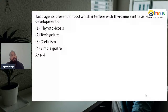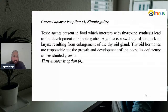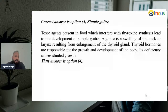Next question: toxic agents present in foods which interfere with thyroxine synthesis lead to the development of what? Thyrotoxicosis, toxic goiter, cretinism, or simple goiter? Answer: simple goiter. Because toxic agents in foods which interfere with thyroxine synthesis lead to simple goiter. A goiter is the swelling of the neck resulting from enlargement of the thyroid gland. Thyroid hormones are responsible for growth and development of the body; their deficiency causes stunted growth. So we choose simple goiter, the fourth option.